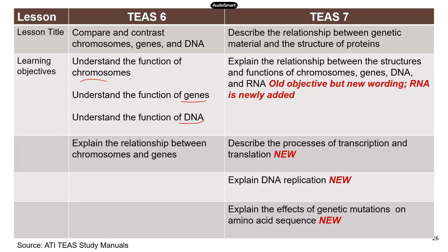Now in TEAS 7 things are very different. You still need to know the relationship between chromosomes, genes, and DNA, but now RNA is added to the lesson. The reason why we now have RNA is you need to know the entire process of gene expression, which is basically the genetic information flow from DNA to mRNA and then to proteins. The genetic information is used to make proteins, so you need to know the two steps in gene expression: transcription and translation.